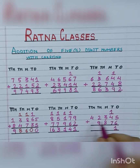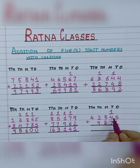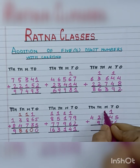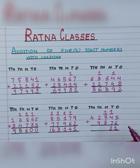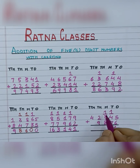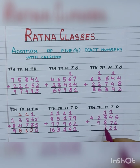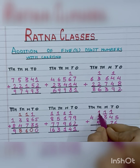Now 1 carry plus 4 is 5, and 5 plus 7 is 12. So we will write 2 here and take 1 carry. Now 1 plus 3 is 4, and 4 plus 8 is again 12 — write 2 and carry 1.